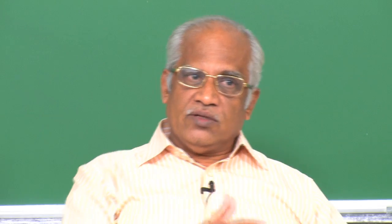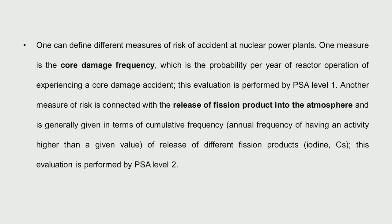Once you know that, you start thinking about what happens next: what are the consequences? Having the core been damaged, these fission products can come to the containment environment or to the outer environment. So the next measure is how much of this fission product will come to the atmosphere and what is the probability — that comes under PSA Level 2, where we are mainly worried about fission products such as iodine and cesium.